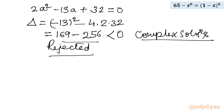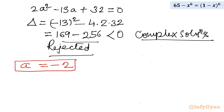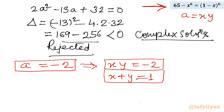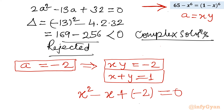Since a equal to minus 2 is the accepted solution and a was our substitution for xy, we have xy equal to minus 2. Combined with x plus y equal to 1 from our system, we can frame a quadratic equation in x using sum of roots equal to 1 and product of roots equal to minus 2. The quadratic equation is x² minus x minus 2 equal to 0.